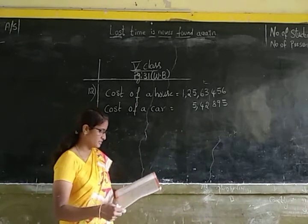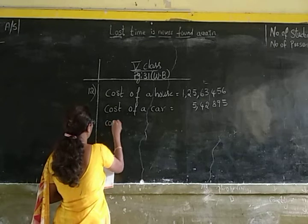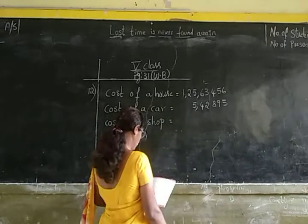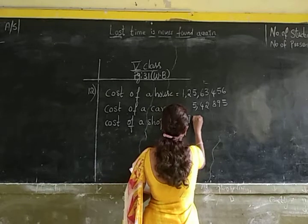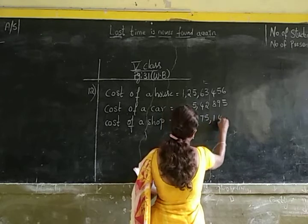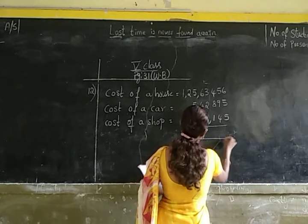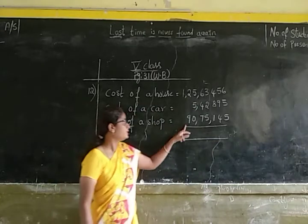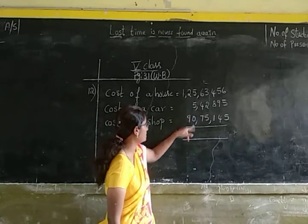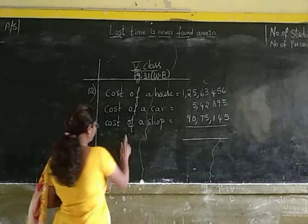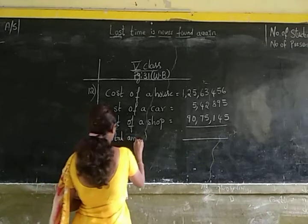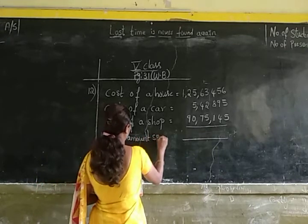Okay children, next he has purchased a shop. So let us write down: cost of a shop is equal to 90 lakhs 75,145. Here, this number is starting from lakhs place, so I will have to arrange it from the last place. Now, here we have to find out the total amount spent.